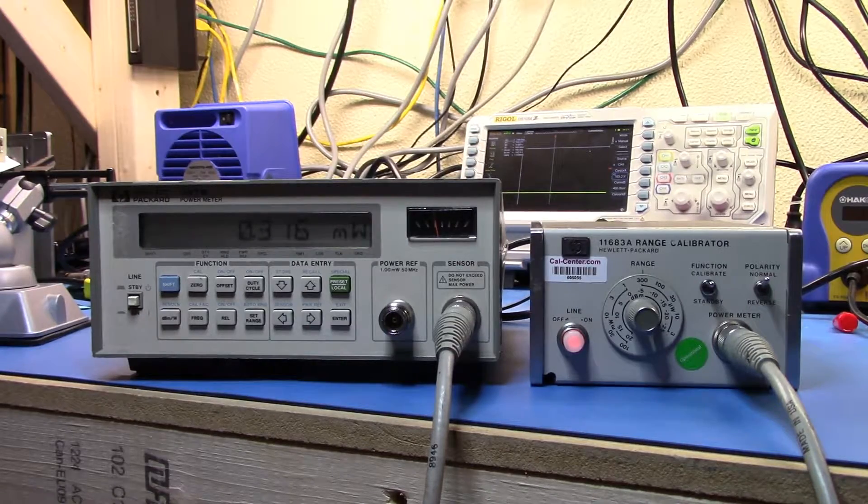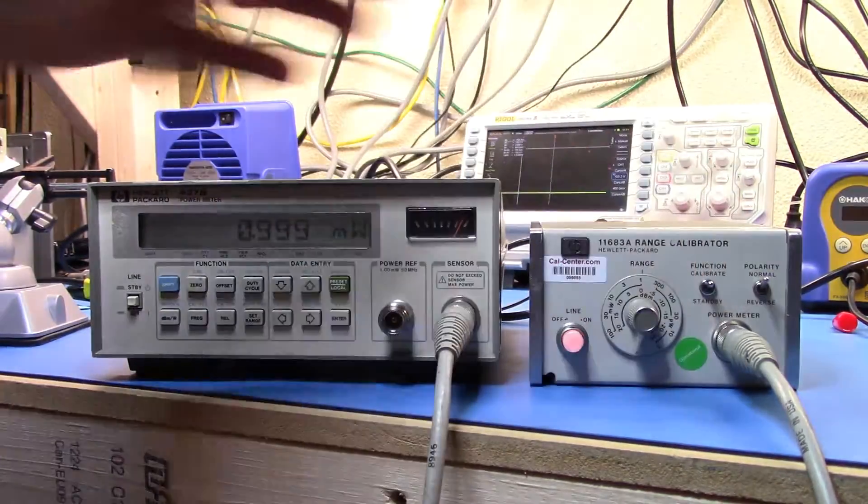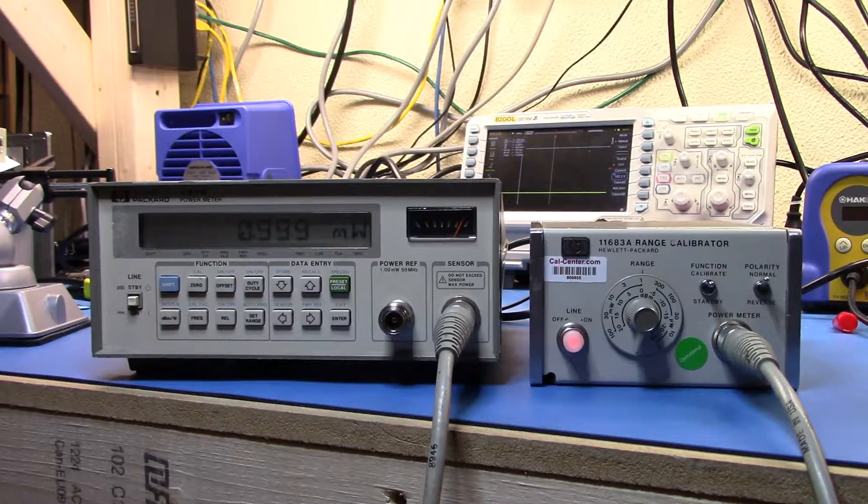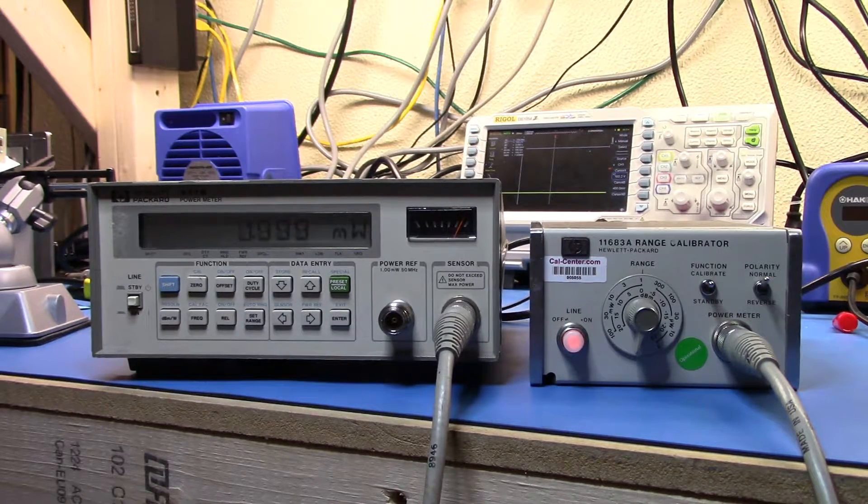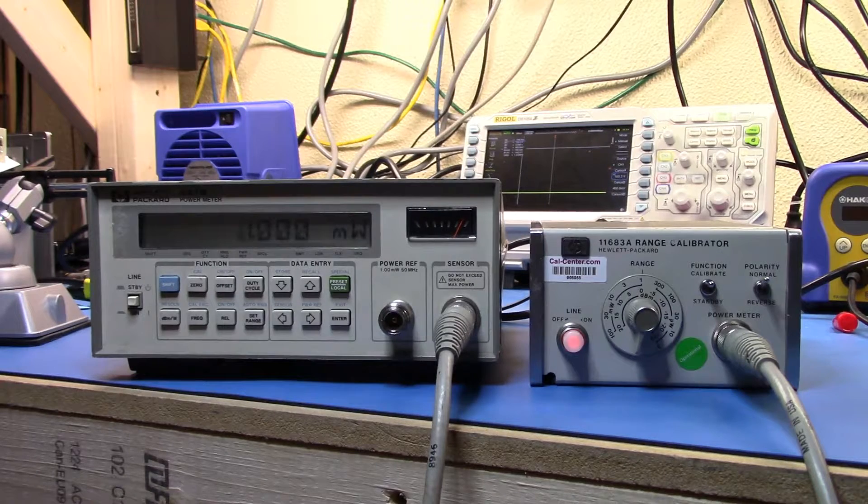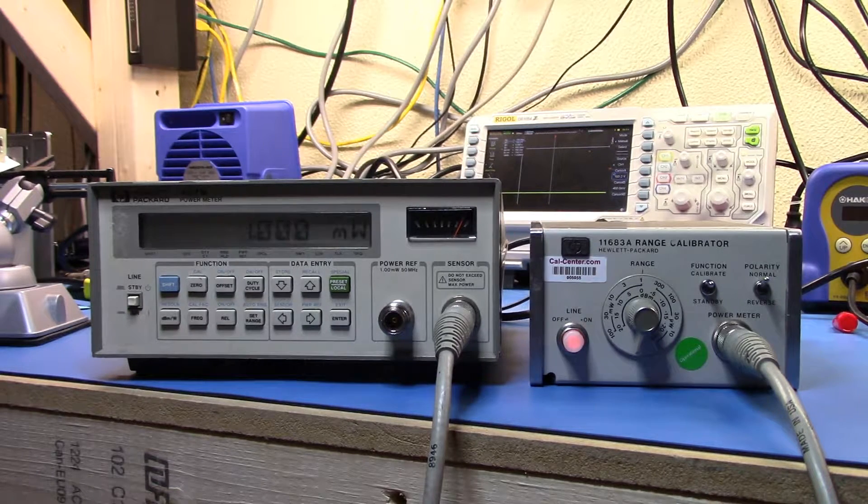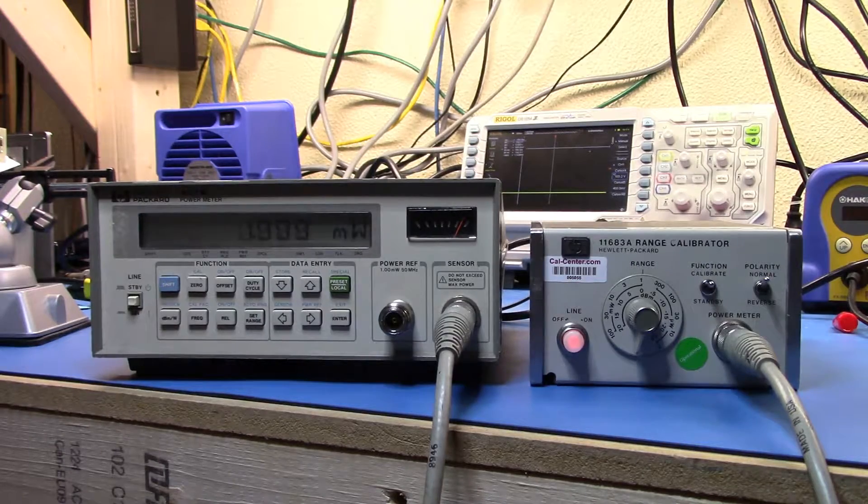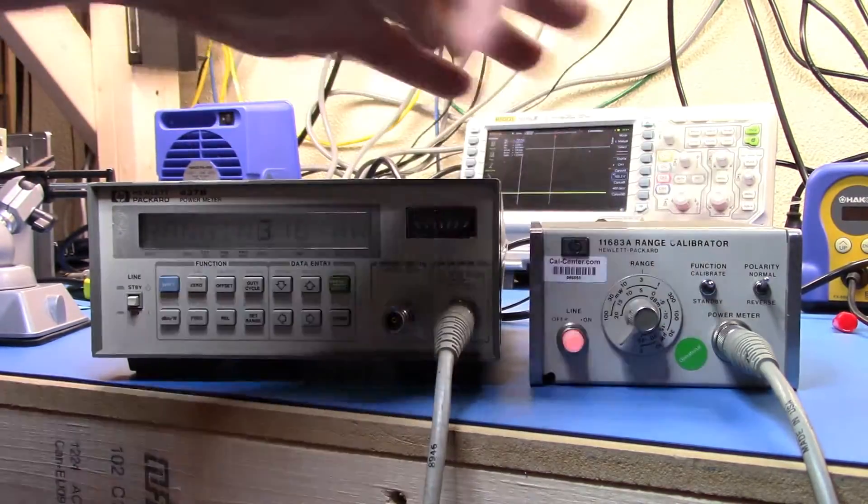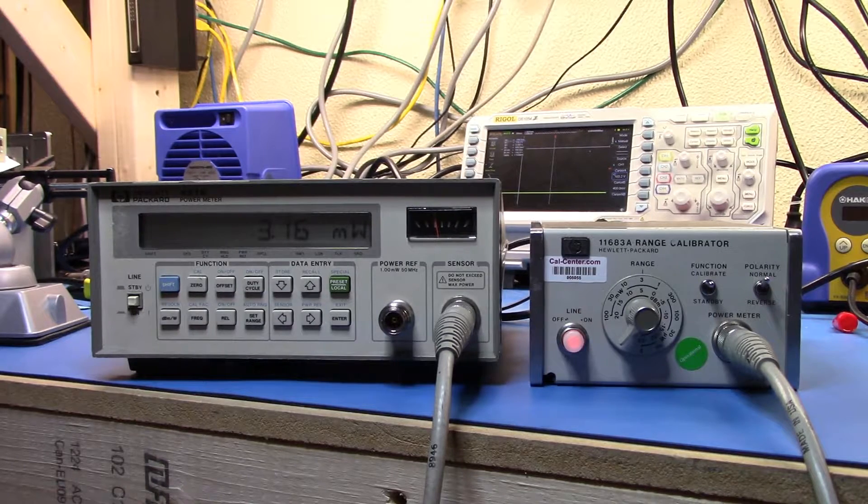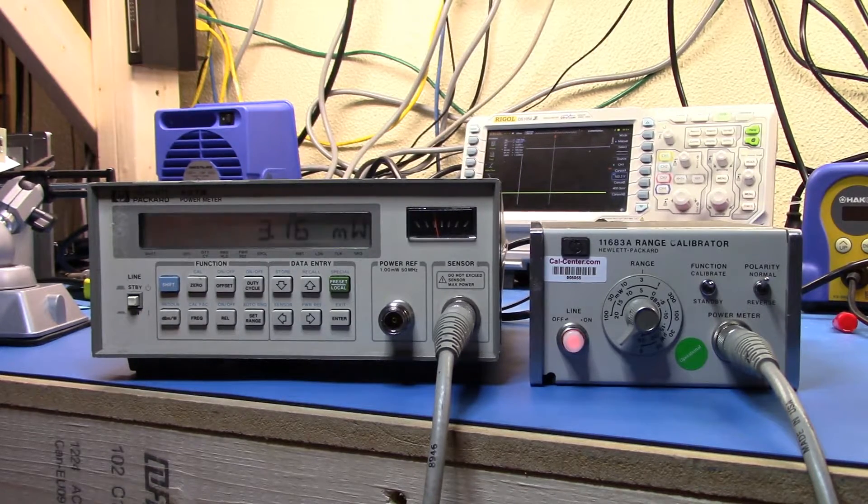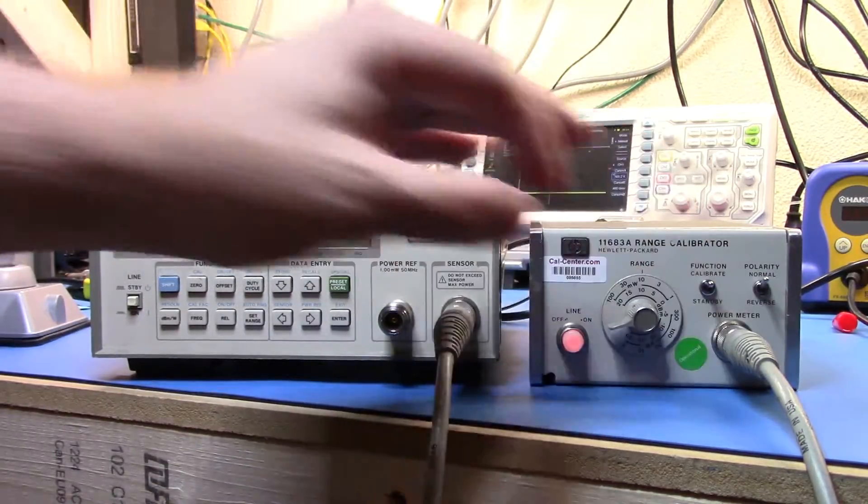So we're pretty good there. Let's go up to 1 milliwatt. And we should be close because we just calibrated there. So I'm going to call that, worst case, 0.999. Let's go to 3 milliwatts. It seems pretty much bang on 3.16.